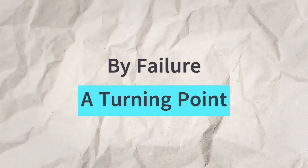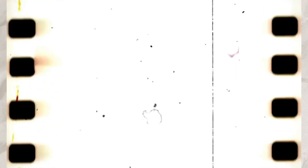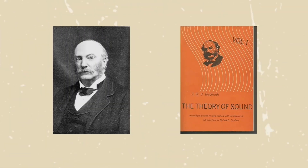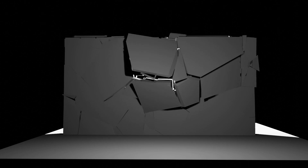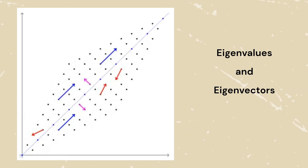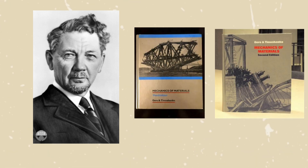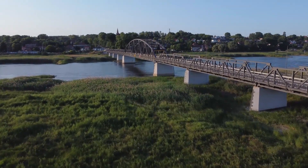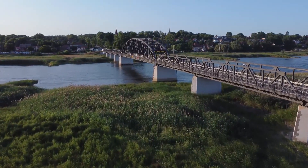Sometimes failure also leads to groundbreaking discoveries. Around 1903 to 1905, a bridge in Quebec, Canada collapsed during a storm. At the time, Lord Rayleigh's book on sound was widely available, and it linked sound with structural collapse. This led to the analysis of sound waves and vibrations affecting structures. The concept of eigenvalues and eigenvectors came into play, and in 1908, a Russian engineer named Stephen Timoshenko fundamentally changed civil engineering. His work on structural analysis laid the groundwork for modern civil engineering practices, making him one of the most influential engineers of the 20th century.